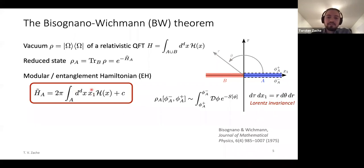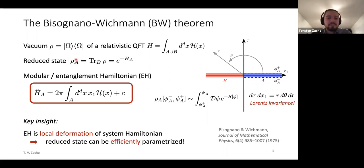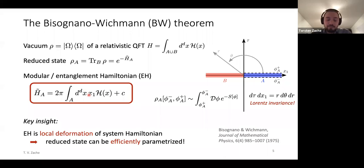So this is a hand-waving sketch of the derivation, which is actually a rigorous theorem. The key insight for us is that the entanglement Hamiltonian is not some very complicated object — in principle there could be exponentially many parameters necessary to describe the reduced density operator — but because it's just a local deformation of the system Hamiltonian, there's an efficient parameterization just in terms of these deformation parameters.